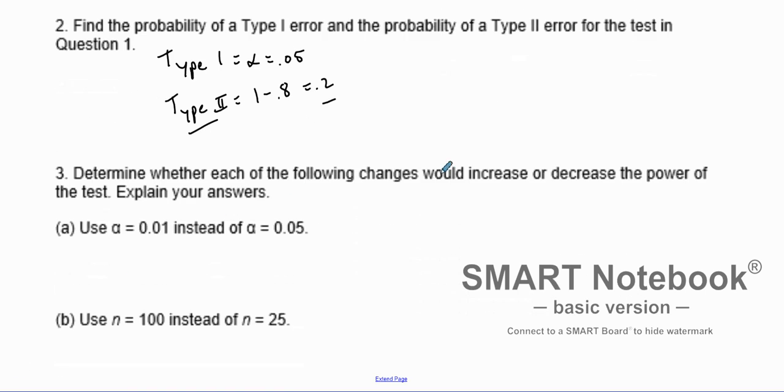Now determine whether the following change would increase or decrease the power of the test. Explain your answer. In this one we use alpha of 0.01 instead of 0.05. Well, because we are decreasing alpha to 0.01, then the power of the test will also decrease.